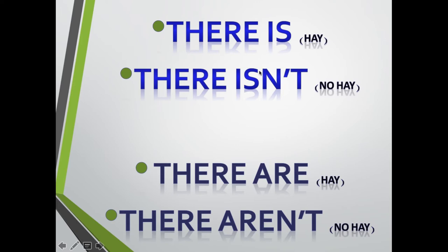En español ahora. Tenemos estas frases que están acá para expresar cantidad. Si es que hay en singular, si es que no hay algo en singular, y si es que hay algo en plural, y si no hay en plural. Veamos ejemplos. Let's continue.